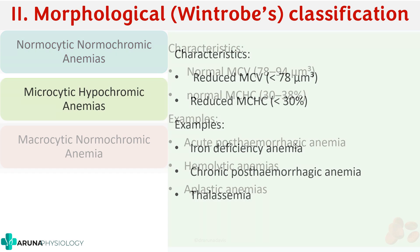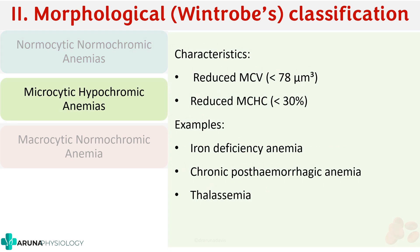Next is microcytic hypochromic anemia. As the name suggests, the RBCs are small (microcytic), so there is a reduced MCV and a reduced MCHC. It is most commonly seen in iron deficiency anemia, chronic post-hemorrhagic anemia, and thalassemia.